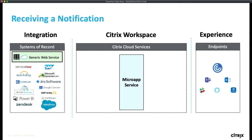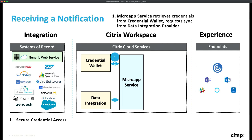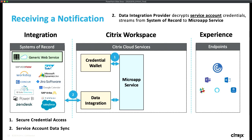Let's dive deeper. We have our microapp service hosted by Citrix cloud services, and now we want to see how we'd actually drive a notification from one of those source systems. The first thing is our microapp service needs to communicate with the system of record. The first step isn't a direct communication — we're going to use our data integration layer and credential wallet to securely retrieve the API credentials for communicating with that system. Our data integration layer is really just a pass-through; it knows how to communicate with every one of those systems of record and stream data into our microapp service. Importantly, it uses a service account credential to pull data from the system of record — this is critical for scalability, letting us process events in the background rather than when users log in.